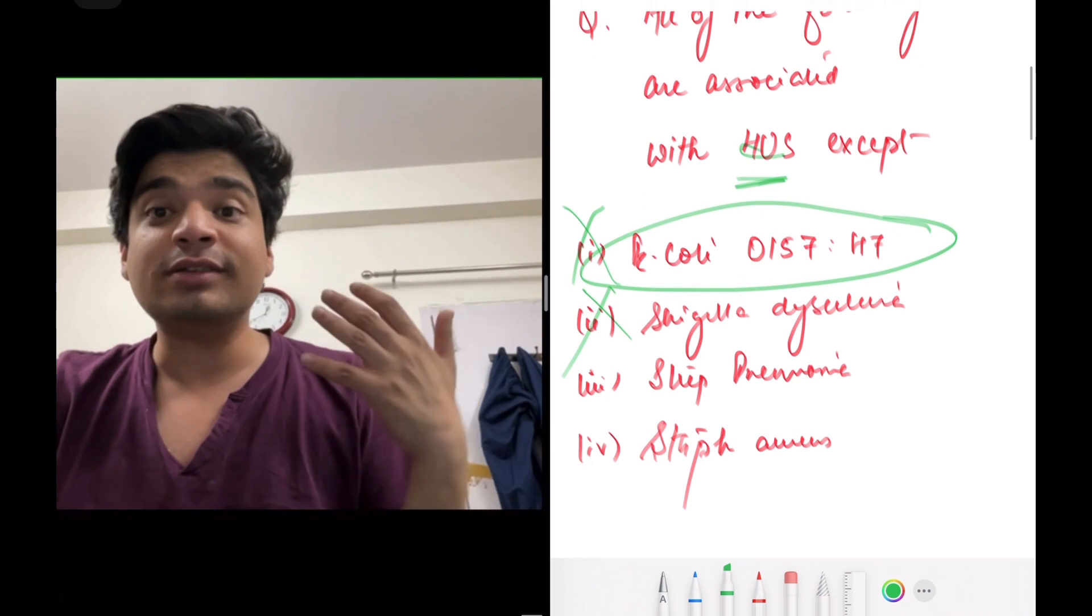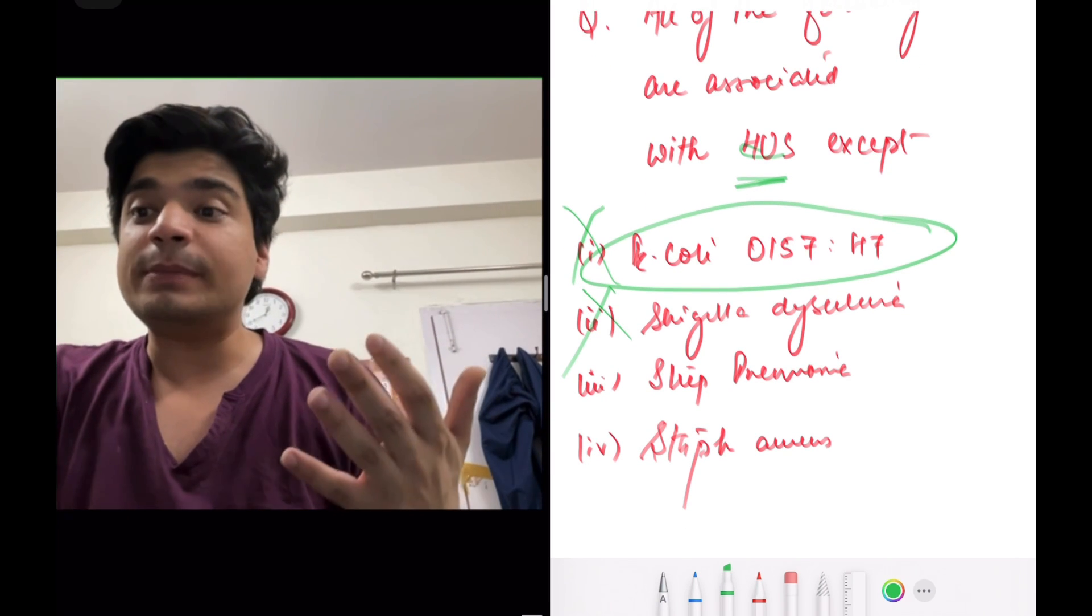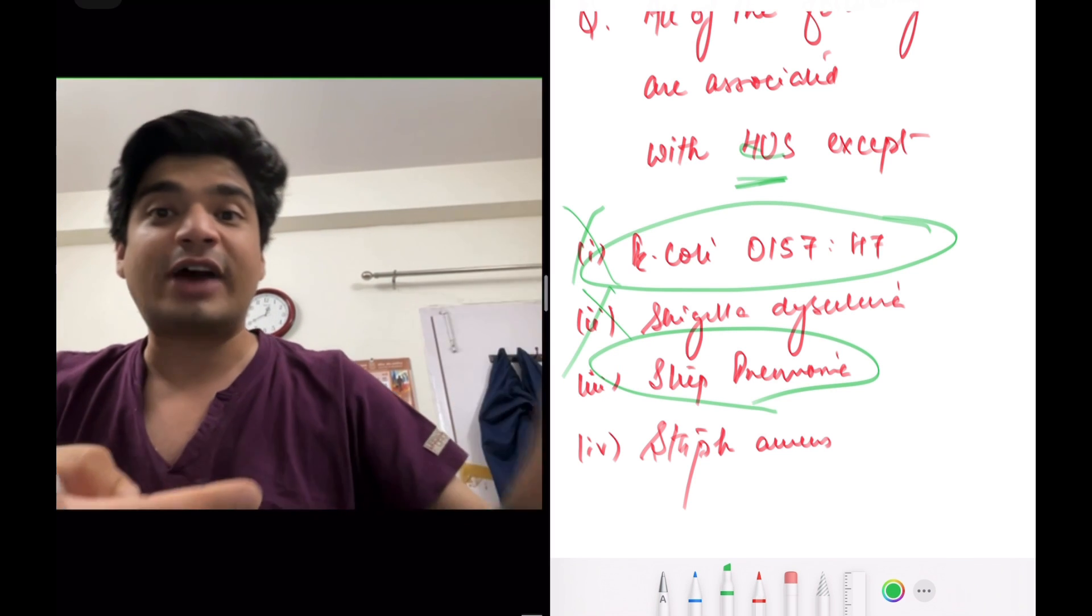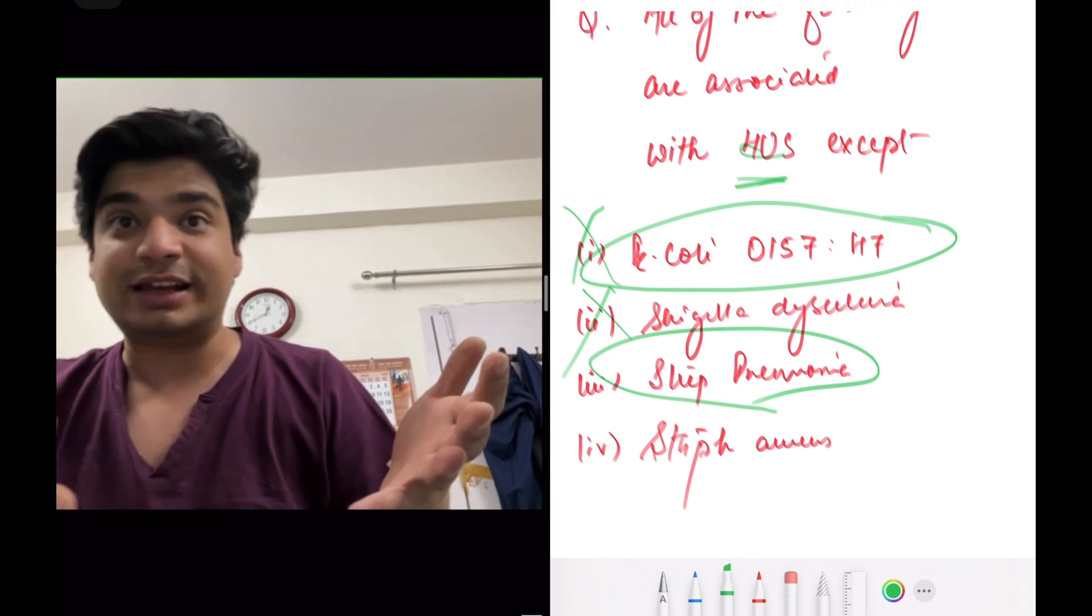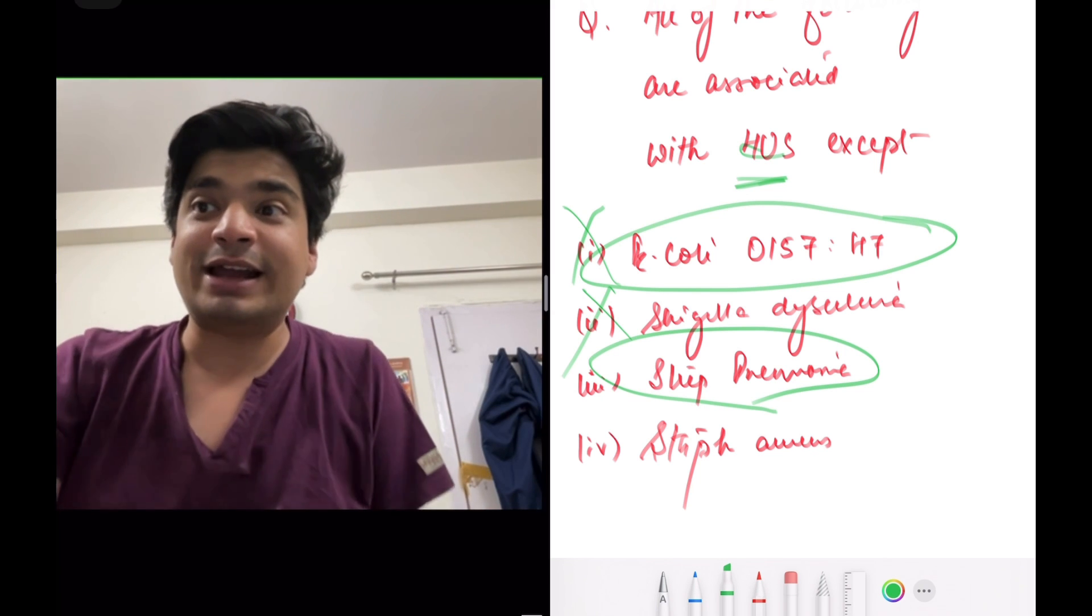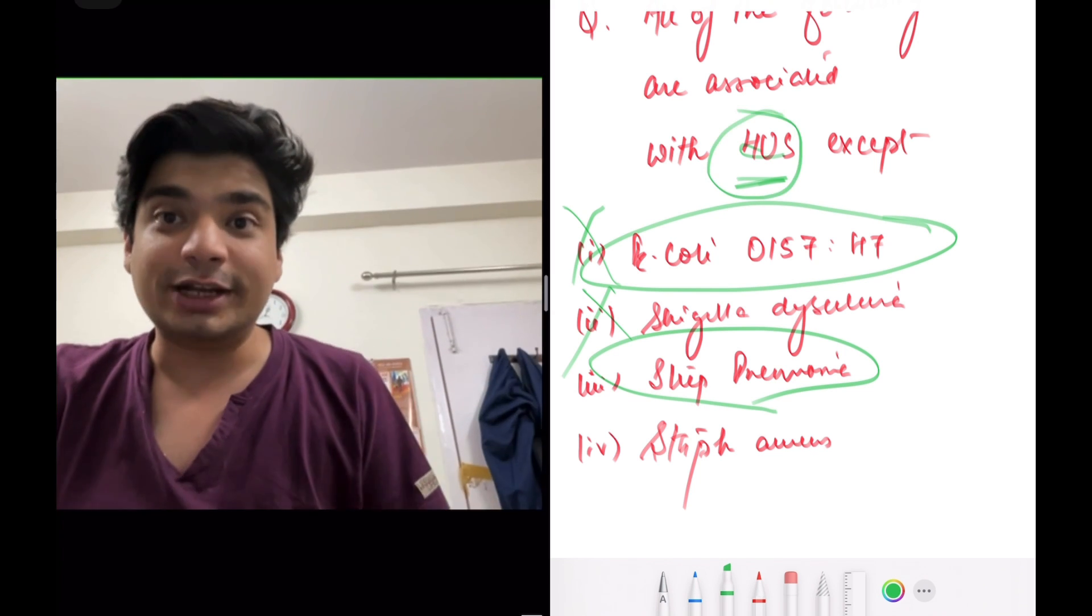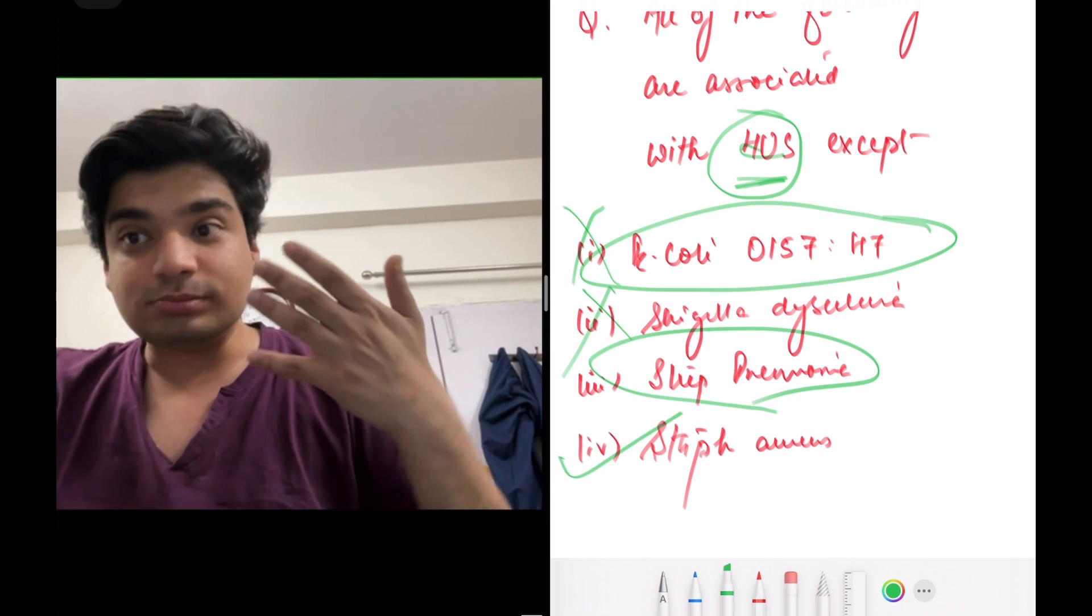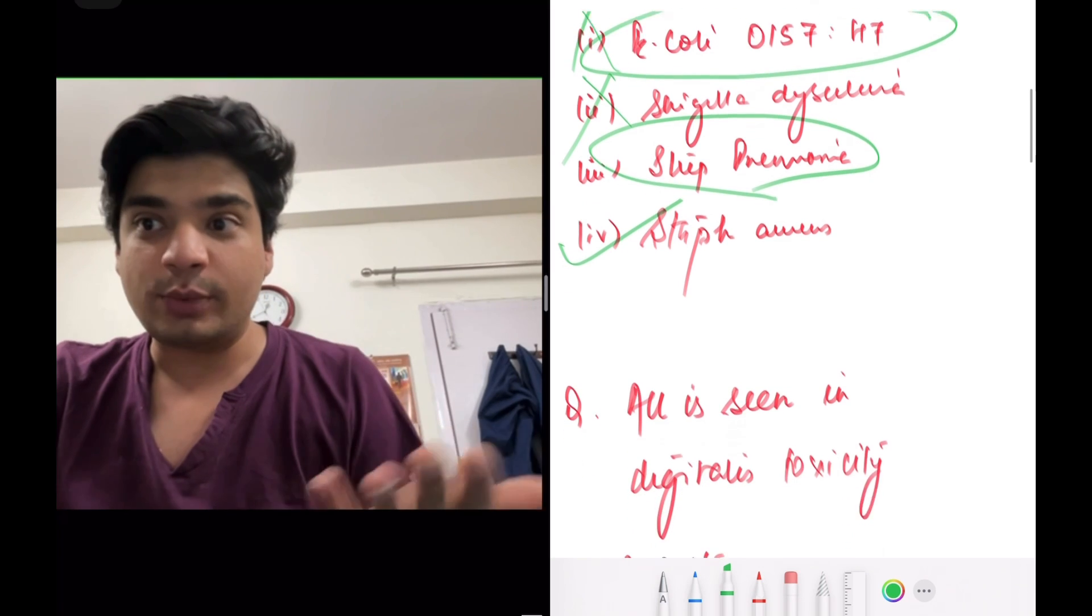Now, between Strep pneumoniae and Staph aureus, I would have thought in the way that Strep pneumoniae, the classification of Strep pneumoniae is in the form like alpha hemolysis, beta hemolysis, gamma hemolysis and things like that. So most likely Strep pneumoniae will have a component that it can result in causing hemolytic uremic syndrome. And I would have marked the answer as Staph aureus and Staph aureus is the correct answer. That's how I would have done it.